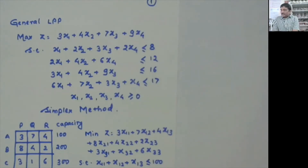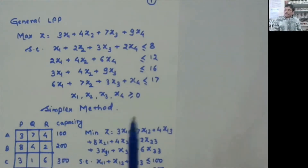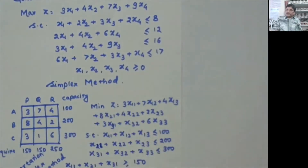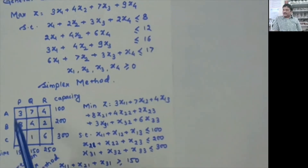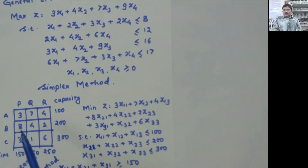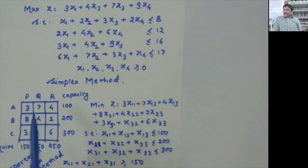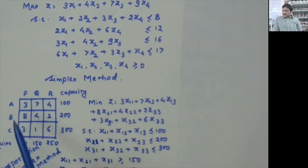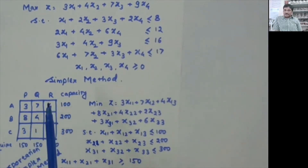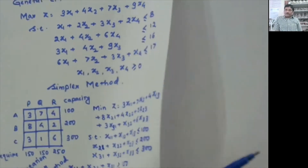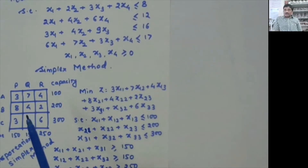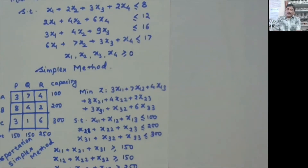This is called a general LPP because ahead you will see some specializations. After seeing the general LPP and its solution by simplex method, we turn to the transportation problem. The transportation problem is placed in a matrix with sources (plants) and destinations, along with cost per unit of transportation, capacity, and requirement. The LPP formulation aims to minimize total transportation cost, with variable xij representing quantity transported from source i to destination j.